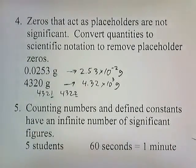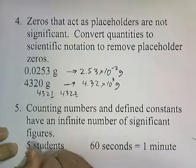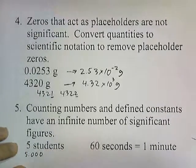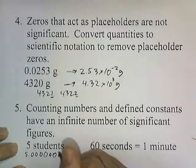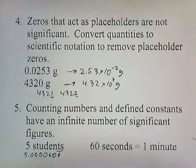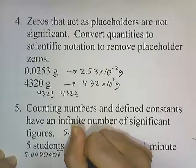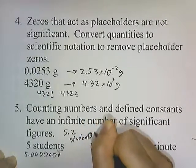Counting numbers and defined constants have an infinite number of significant figures. Five students — that's an infinite number of significant figures. Does it make things any more precise if I say we have 5.0 students, or 5.00 students, or 5.0000 students? We can go to infinity. The way I remember if what we're measuring is a counting number is: if it doesn't make sense to refer to it in decimal or fractional form, it's a counting number. For example, it wouldn't make sense to say you have 5.2 students.